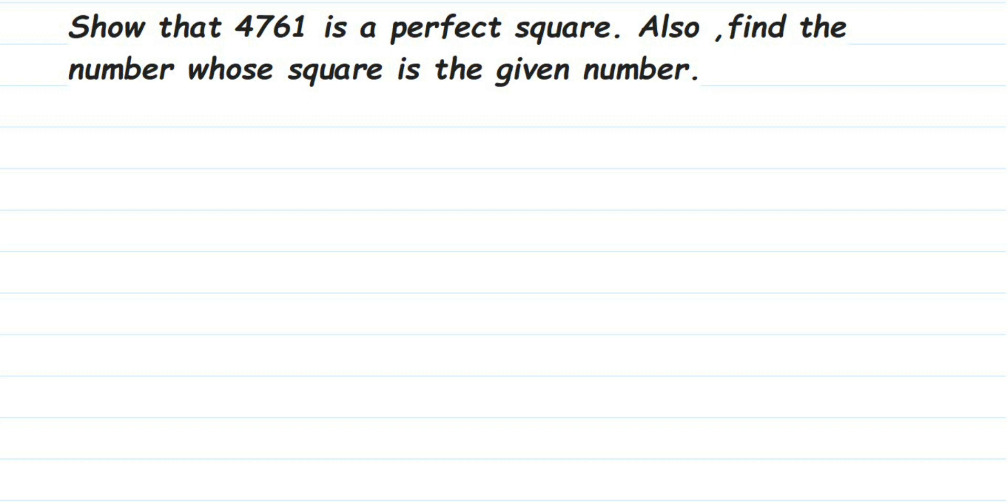Hey everyone, here's a question from square and square root: show that 4761 is a perfect square, and find the number whose square is the given number. So first we have to show that this number is a perfect square, and next we have to find out whose square is this number—that is, we have to find out the square root of this number.